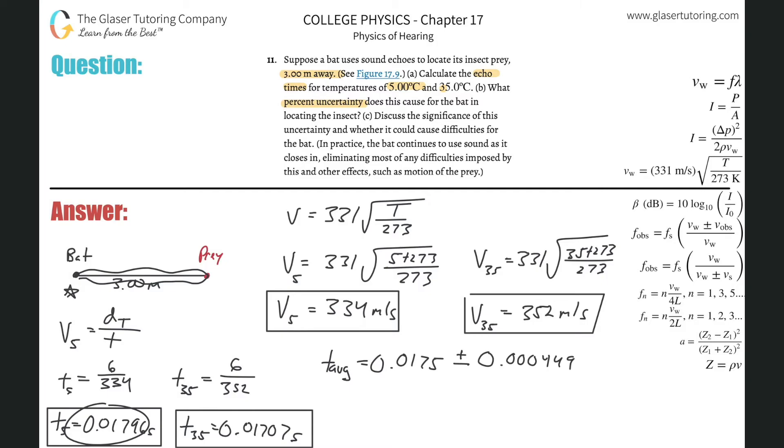So now how do we find the percent uncertainty? We just have to remember that percent uncertainty is equal to the uncertainty in the measurement, which we define as the plus or minus thing, divided by the measurement itself. And what's the measurement? Well, it's the average in this case, multiplied by 100. So simply just plug this in. So it's 0.000449 divided by that average value of 0.0175, and then multiply that by 100.